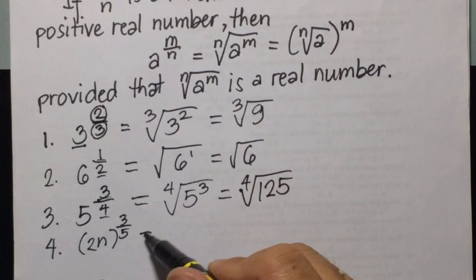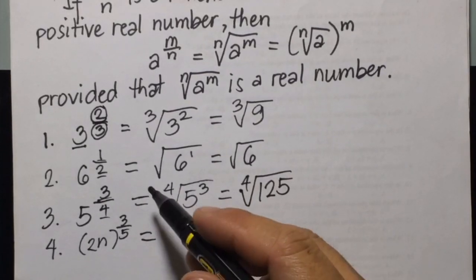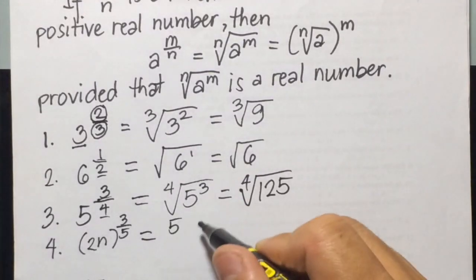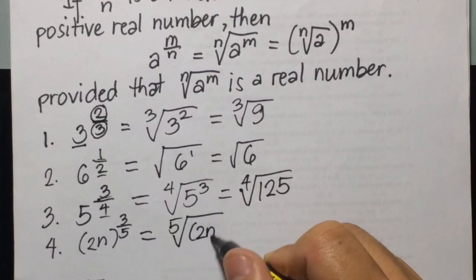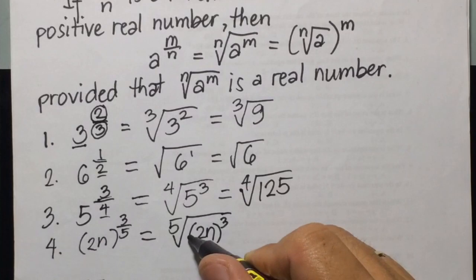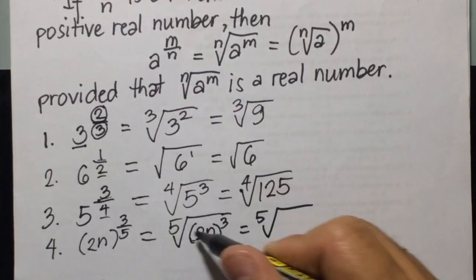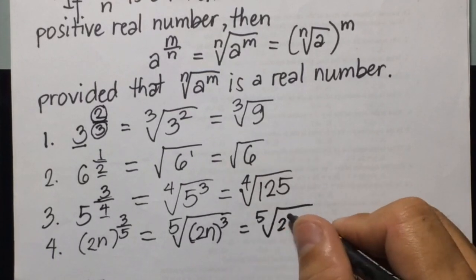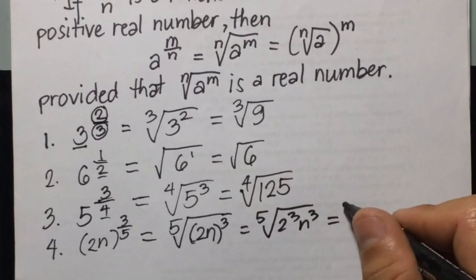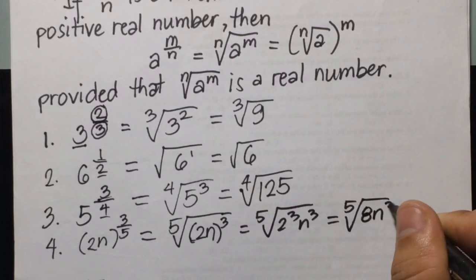Then number 4: the quantity of 2n raised to the power of 3 over 5. We're going to have that as the 5th root of (2n) cubed. Applying the law of exponents, you can expand that as the 5th root of 2 cubed times n cubed. Since 2 cubed is 8, we get the 5th root of 8n cubed.